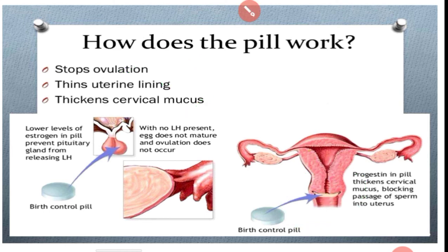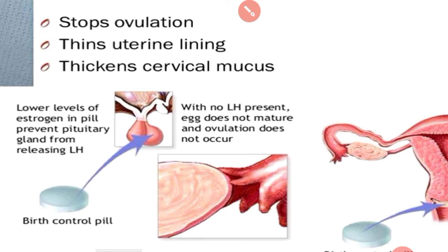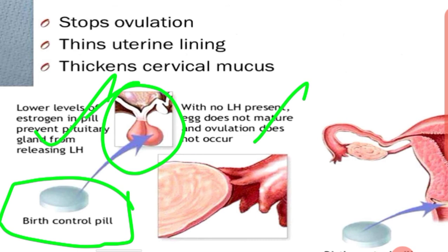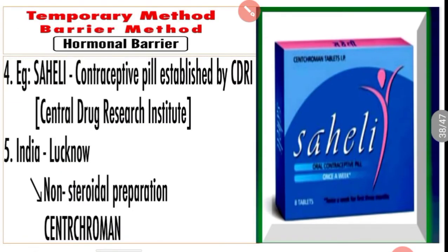If a woman takes oral contraceptive pills, the lower level of estrogen in the pill prevents the pituitary gland from releasing LH. With no LH present, the egg does not mature and ovulation does not occur. That is the basic principle of the oral contraceptive method.